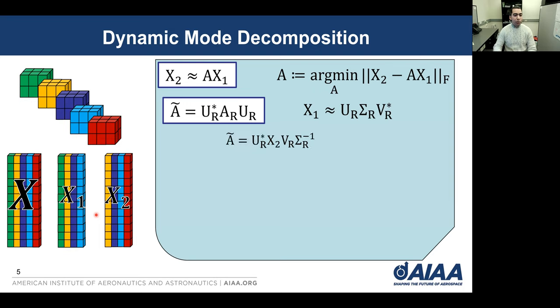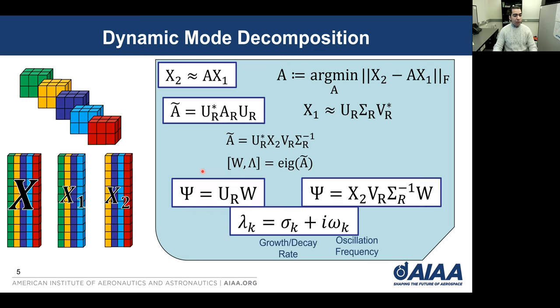Then we compute a smaller A tilde from this relation and perform eigenvalue decomposition to get the eigenvalues and eigenvectors of A tilde.